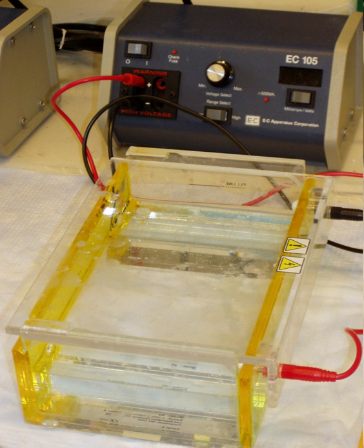The gel is placed in an electrophoresis chamber, which is then connected to a power source. When the electric current is applied, the larger molecules move more slowly through the gel while the smaller molecules move faster. The different sized molecules form distinct bands on the gel.